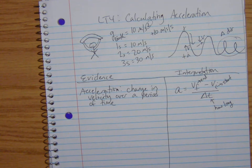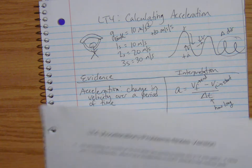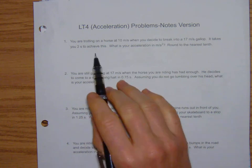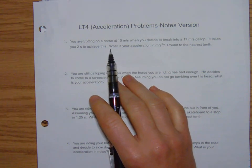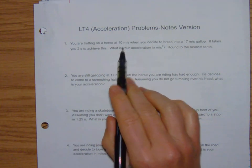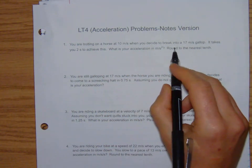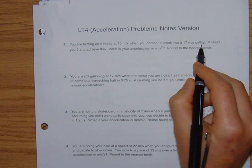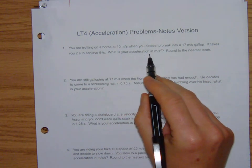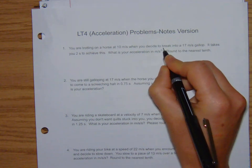Now the rest of the notes are really just working through problems. If you're in class you received this. If you're absent you can pick it up from me. The story goes you are trotting on a horse at 10 meters per second when you decide to break into a 17 meter per second gallop. It takes you 2 seconds to achieve this.